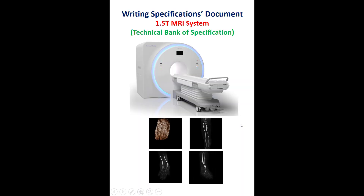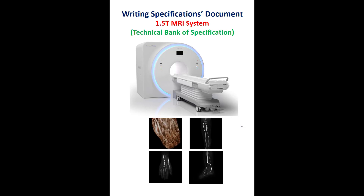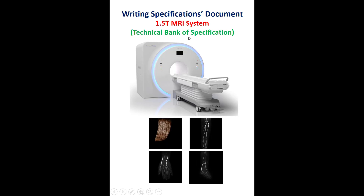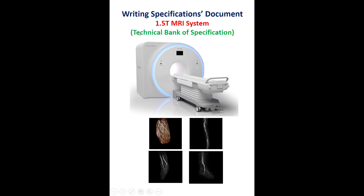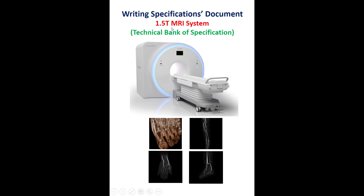This video is a practical example of how to write the specifications for a medical device or system. This example has been taken from the Technical Bank of Specification, which is a free source, and will be about writing the specification for a 1.5 Tesla MRI system.